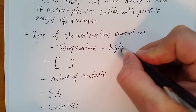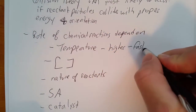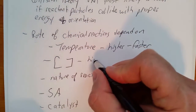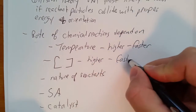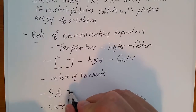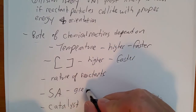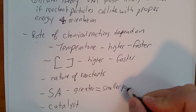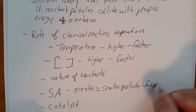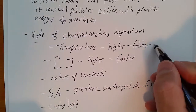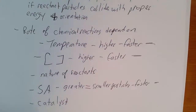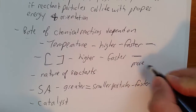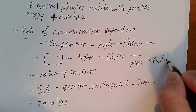Higher temperature means a faster rate of reaction. Higher concentration of reactants means a faster rate of reaction. Greater surface area, which is usually equal to smaller particles, also means a faster rate of reaction. For all three of these, the reason for a faster rate of reaction is more effective collisions.